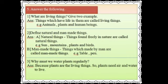Second question: define natural and man-made things. Natural things: things found freely in nature are called natural things — for example, sun, mountains, plants, and birds. These things exist freely in nature, so they are natural things. Man-made things: things which are made by man are called man-made things — for example, table and pen.